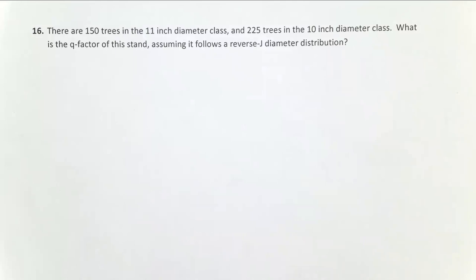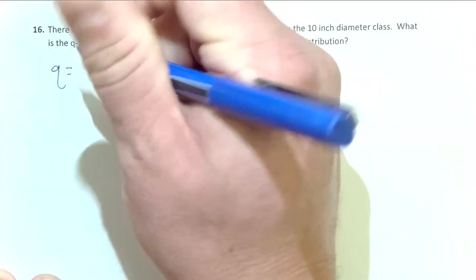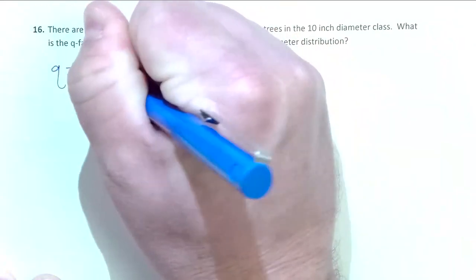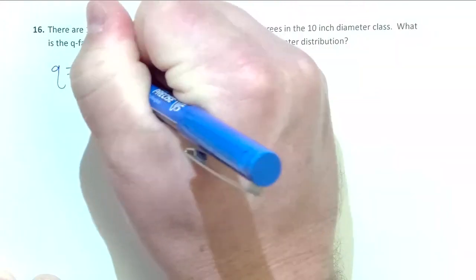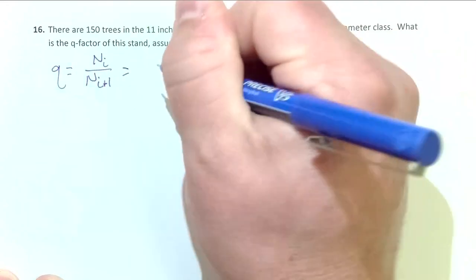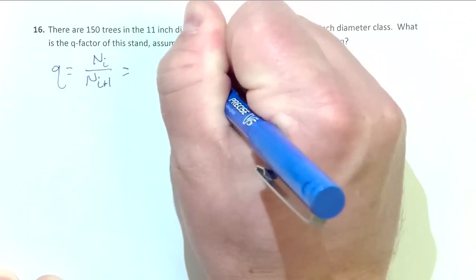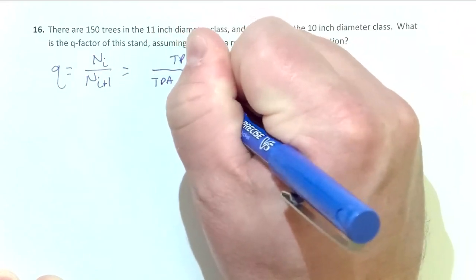So let's start off by defining Q, so we know what we're talking about. Q is equal to N sub i over N sub i plus 1. So we've got subscripts. That seems a little confusing. What this really means is just the trees per acre in a size class divided by the number of trees per acre in the next largest class.